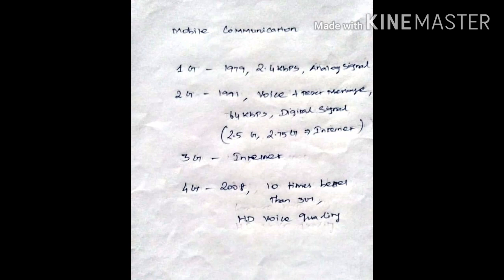Second generation was started in 1991. It has some additional features in comparison to the first generation, like SMS and voice service. Versions like 2.5, 2.75 had come for the initialization of internet facility.